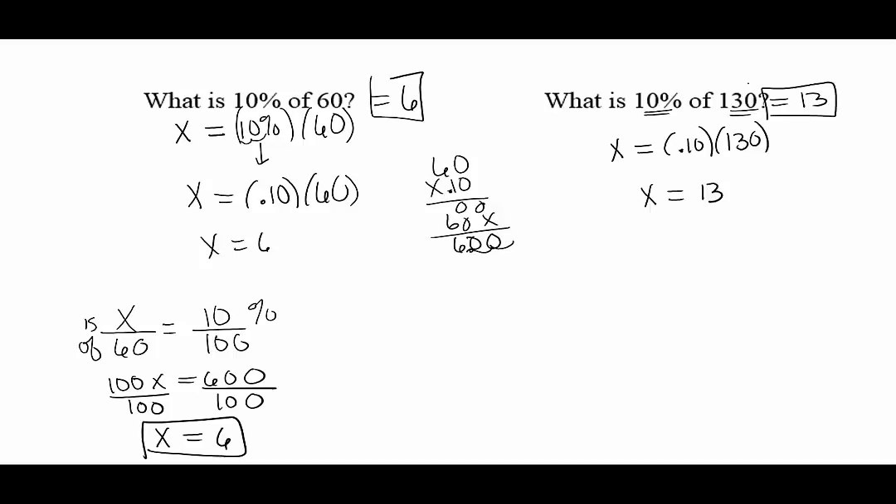Whenever you're taking 10%, you move the decimal one place to the left. Next, 10% of 55, what is 10% written as a decimal of is times 55 and we get 5.5. We see that once again we took the decimal and moved it to the left.